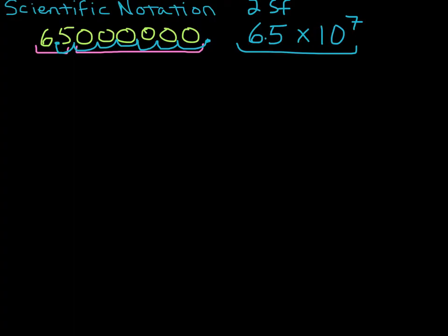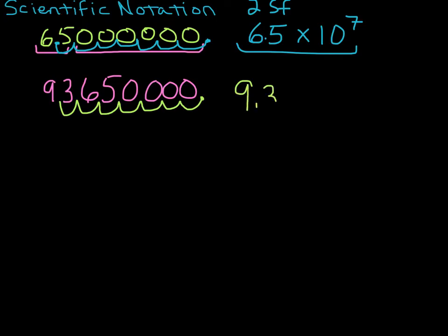So let's do another one. Now let's do 93,650,000. So again, we're going to put in our imaginary decimal place. And we're going to move the decimal place one, two, three, four, five, six, seven places.